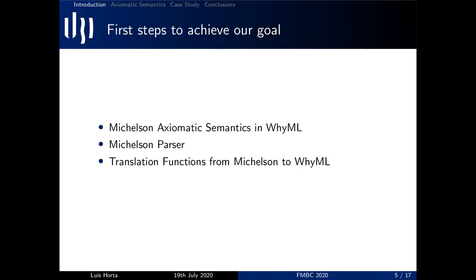So the first steps that we needed to accomplish in order to achieve Wilson were to implement an axiomatic semantics for Michelson inside Why3, as well as a Michelson parser so that we can use the Why3 API for translating Michelson into YML.